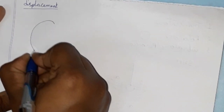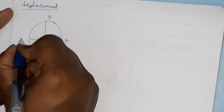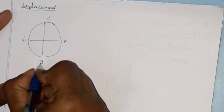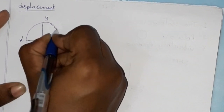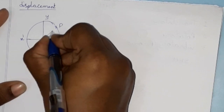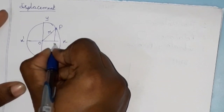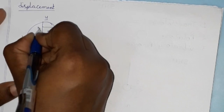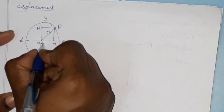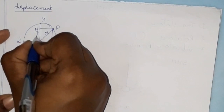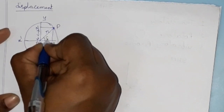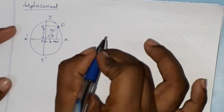Now we will discuss the displacement. Again we have a circular path with four quadrants X, Y, X dash, Y dash. We have a particle P, with origin O and radius R. The projections on the axes give us the displacement components X and Y.